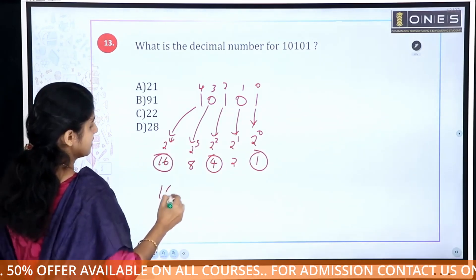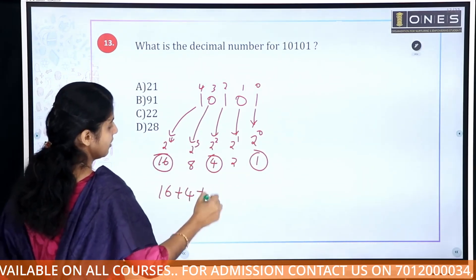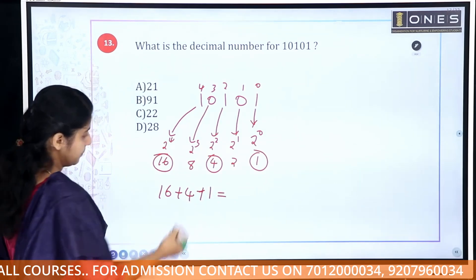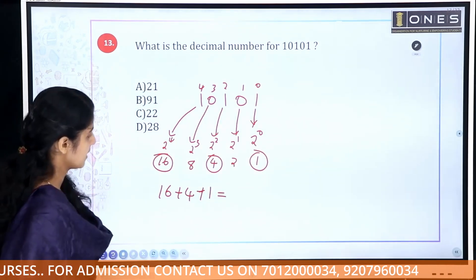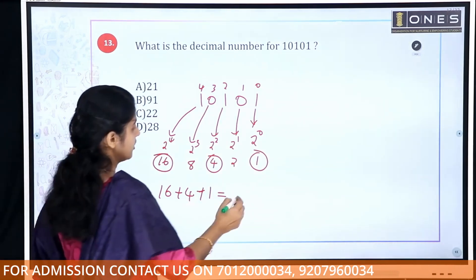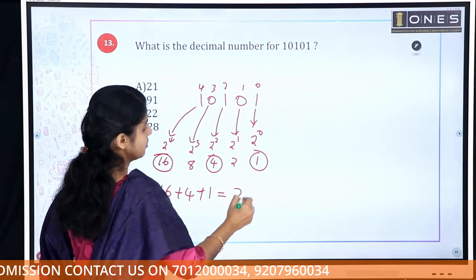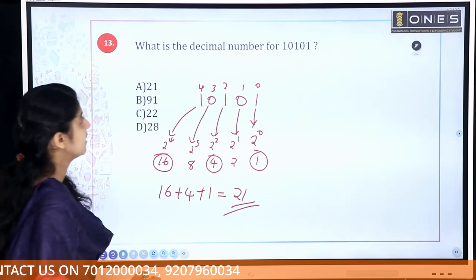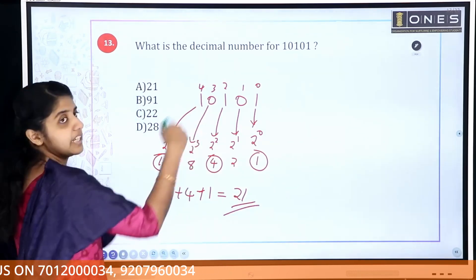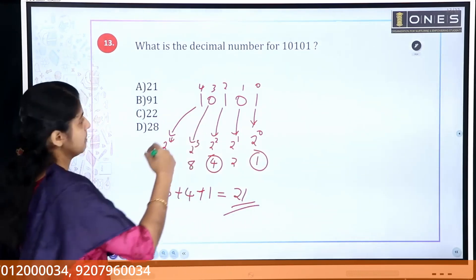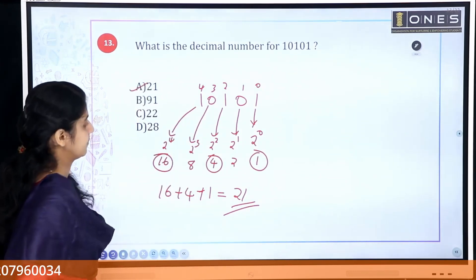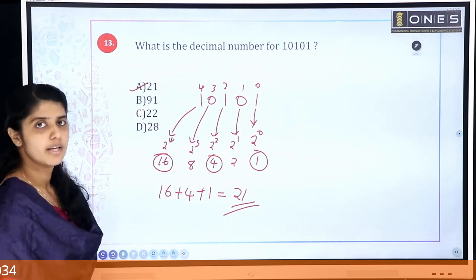So the calculation is: 16 plus 4 plus 1. That gives 16 plus 4 equals 20, and 20 plus 1 equals 21. The equivalent decimal value is 21. The answer is Option A.